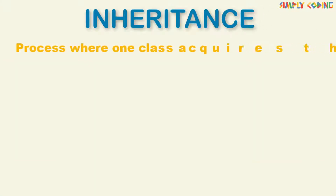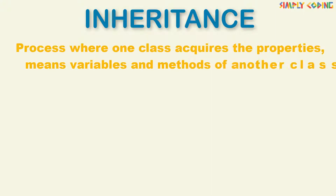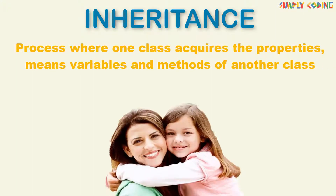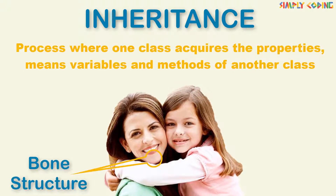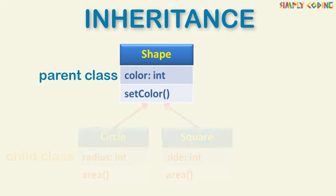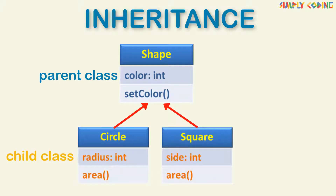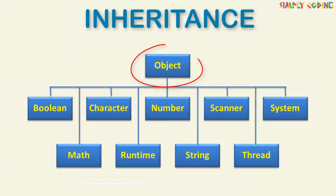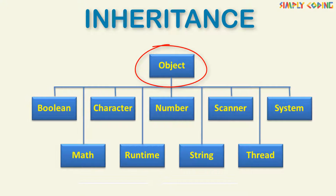In OOPS, inheritance can be defined as the process where one class acquires the properties — means variables and methods — of another class, like how a child inherits from parents: similar eyes, hair, and maybe money too. Similarly, in OOPS, if you have a parent class like Shape, the child class can inherit variables and methods from the parent class. In fact, in Java, all classes are derived from a base class called Object.